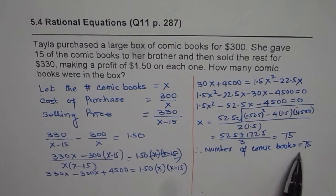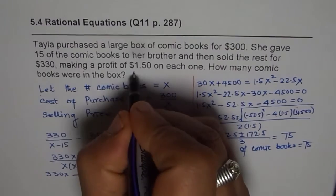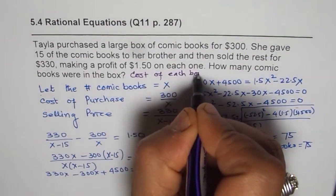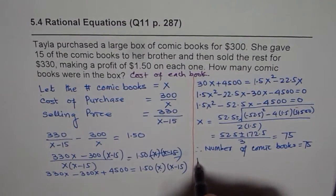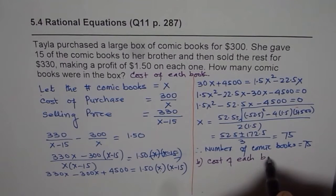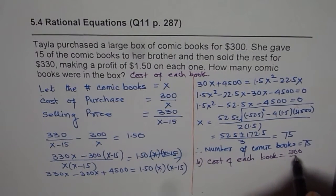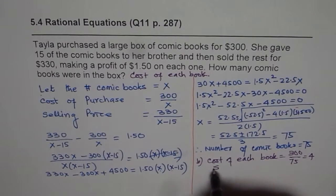Now the question could be, what was the cost of each book? So let me add that question here. Also find cost of each book. How will you do that? Cost of each book will be, so I'm adding part B to it, cost of each book, not selling price, will be 300 divided by x. 300 divided by 75, that is the value of x. Which is 4. So cost of each book is $4.